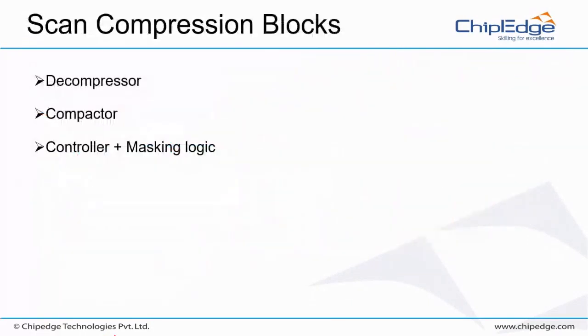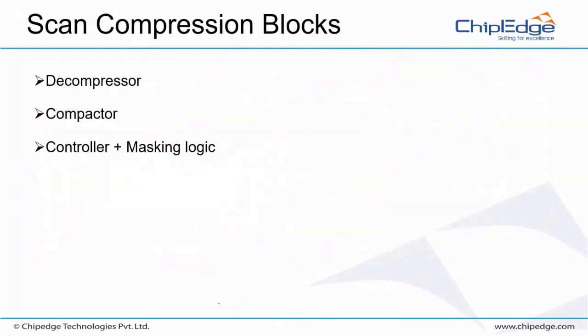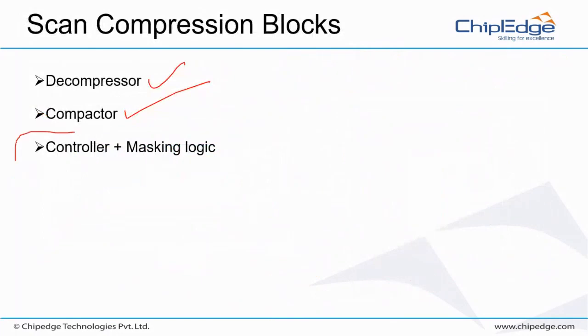This is called a decompressor, and this is called a compactor. The decompressor is at the input side where you're converting 3 to 300, and the compactor is at the output side where you're converting 300 back to 3. Obviously you need a controller - to control any test logic, you need a controller.